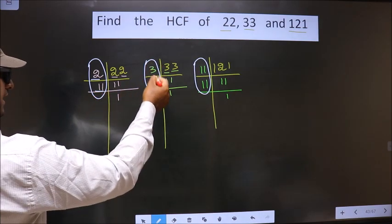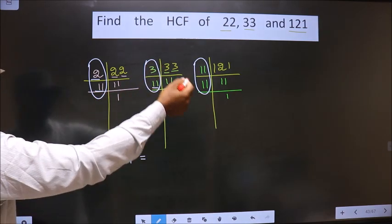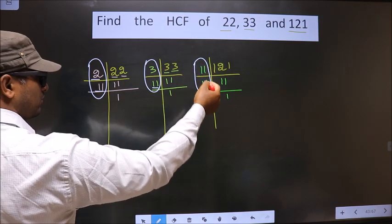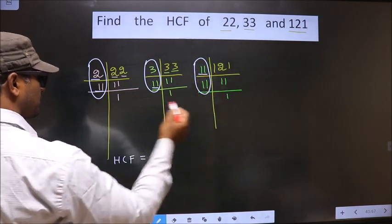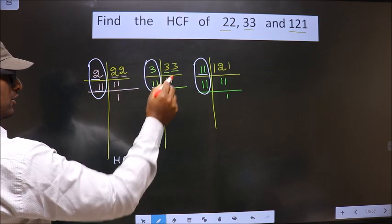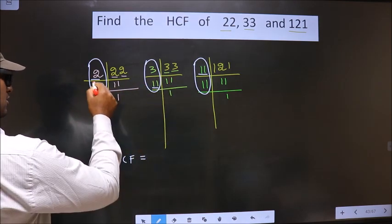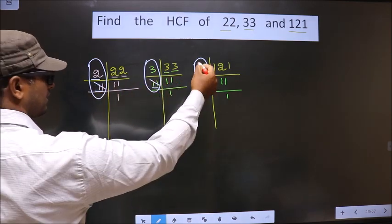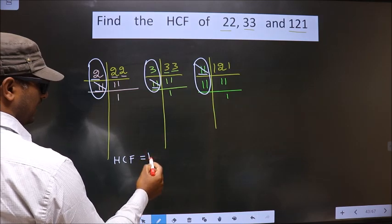11. Do we have 11 here? Yes. So go to the next place. Do we have 11 here? Yes. So 11 is present in all the 3 places. So you cut 11 and write here.